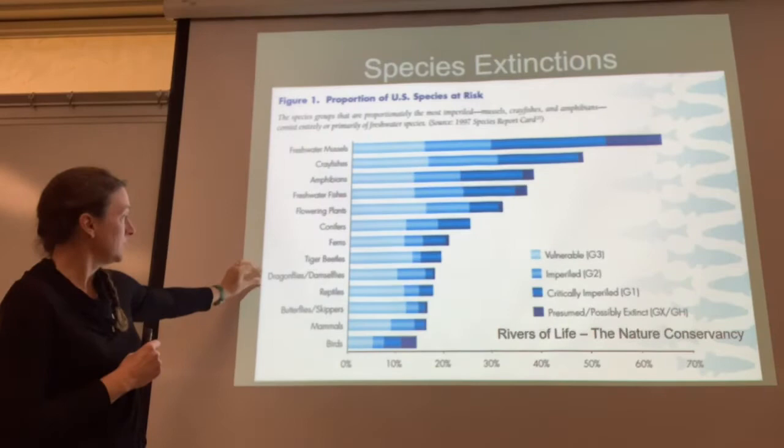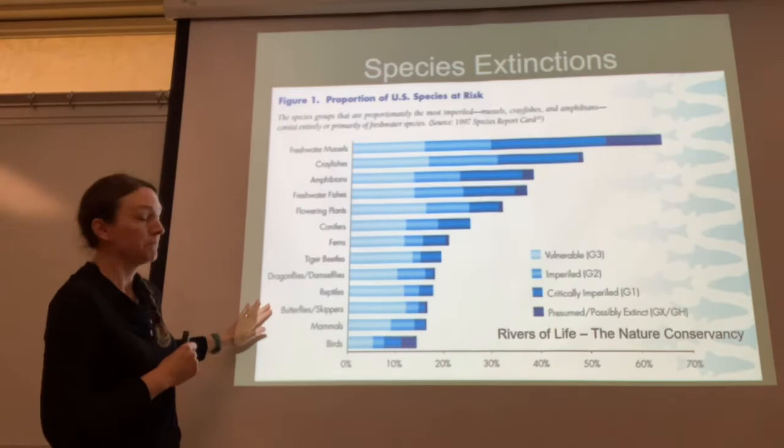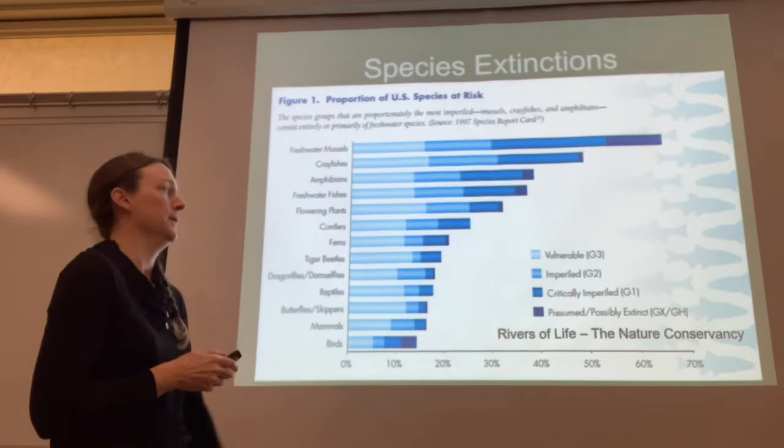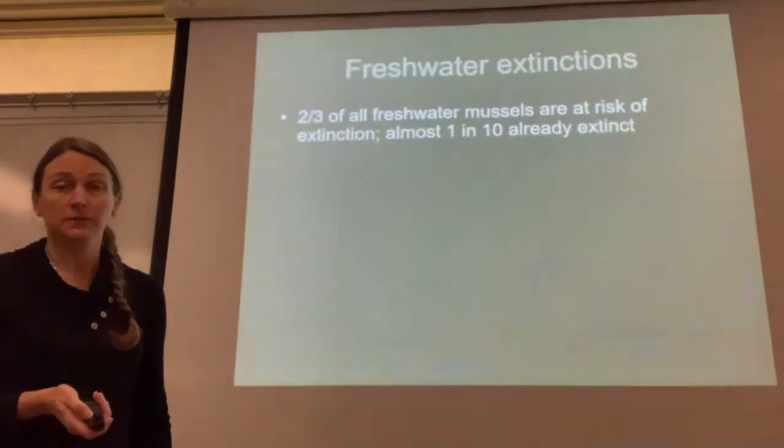We also have dragonflies and damselflies as aquatic organisms on the list, followed by reptiles — sometimes aquatic — butterflies and skippers — sometimes aquatic, which we'll talk more about in aquatic entomology — and some mammals and birds. A lot of these organisms are vulnerable, they're imperiled, and some might already be extinct. Many of them happen to be freshwater obligates.